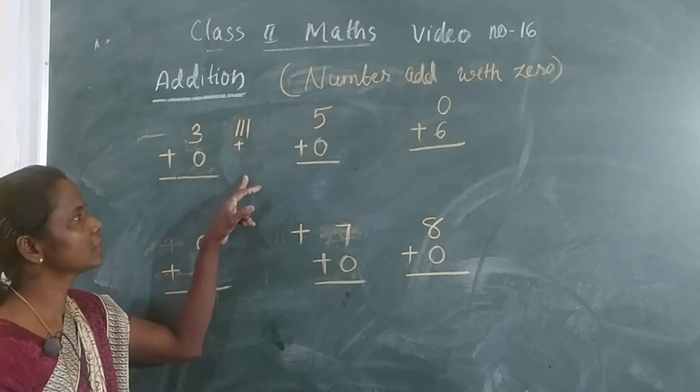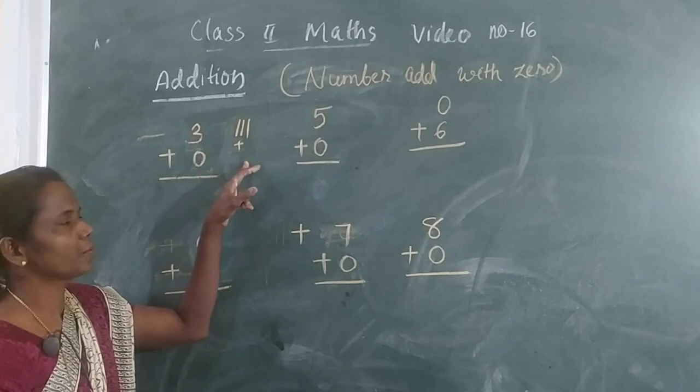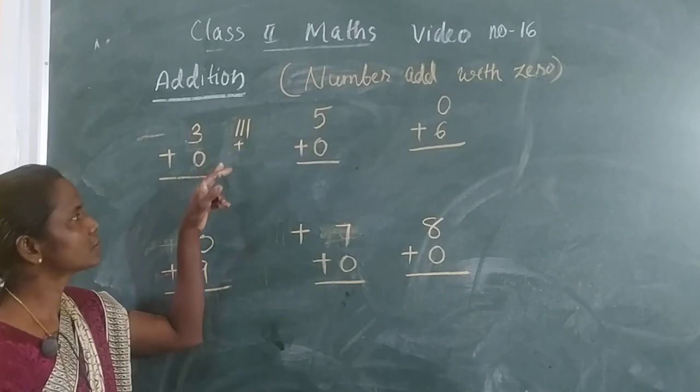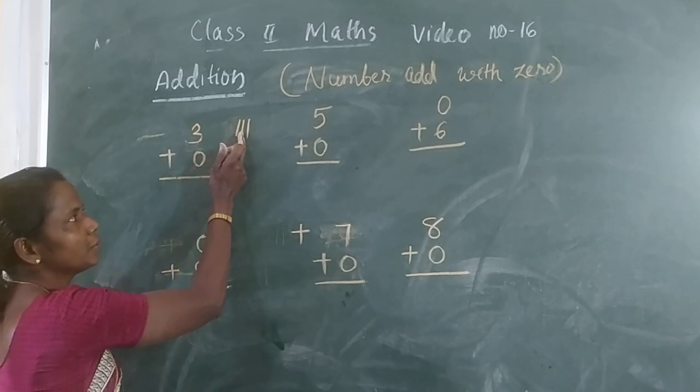So this place, then this place, 0 means nothing. So then add this number, how many lines? 1, 2, 3.